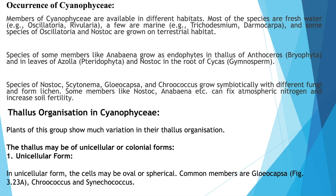Nostoc is present in the coralloid roots of Cycas in gymnosperms. Species of Nostoc, Cytonema, Gloeocapsa, and Calothrix grow symbiotically with different fungi to form lichens. Some members like Nostoc and Anabaena can fix atmospheric nitrogen and thereby increase soil fertility.